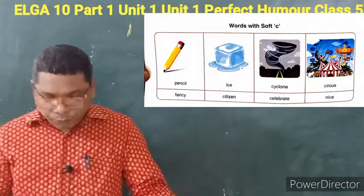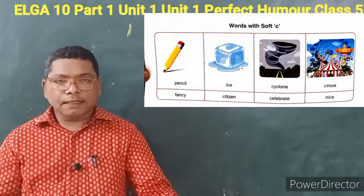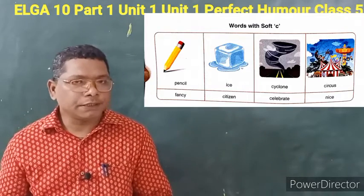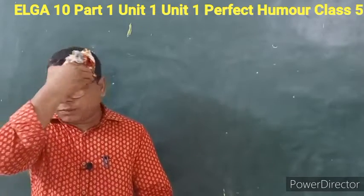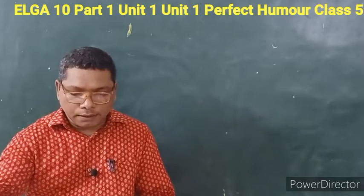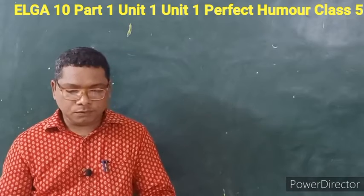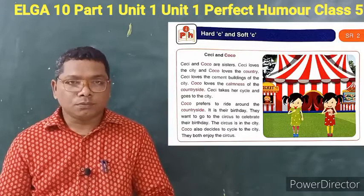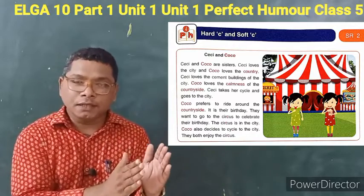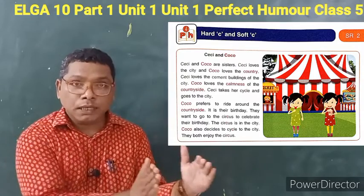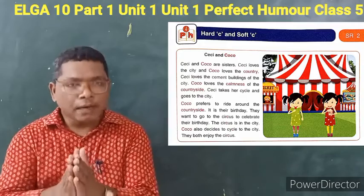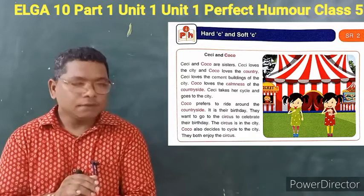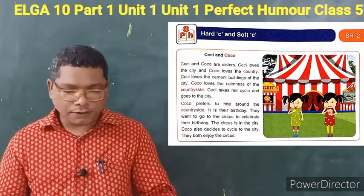Now we will see page number seven. There are two different stories — use of hard C and use of soft C. Let me tell you about both sisters. The names of the sisters are Sisi and Coco. Sisi is soft C and Coco is hard C. S sound is soft C and K sound is hard C.